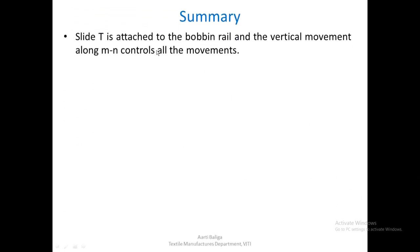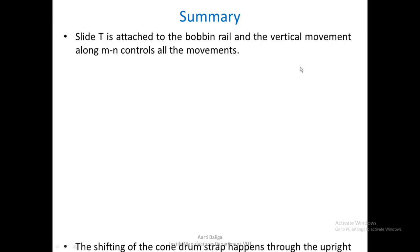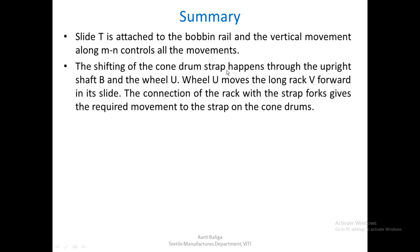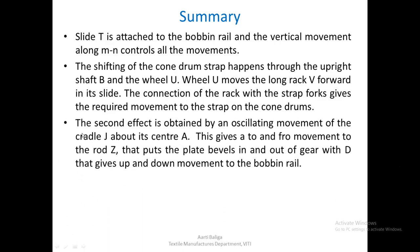To summarize: slide T is attached to the bobbin rail, and the vertical movement along MN controls all the movements. The shifting of the cone drum strap happens via upright shaft B — wheel U moves along the long rack V forward in its slide. The connection of the rack with the strap forks gives the required movement to the strap on the cone drum. This is the first function.